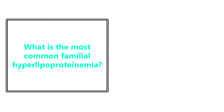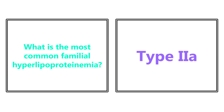What is the most common familial hyperlipoproteinemia? The most common familial hyperlipoproteinemia is type 2A. Try to remember that and stick it in the back of your brain.